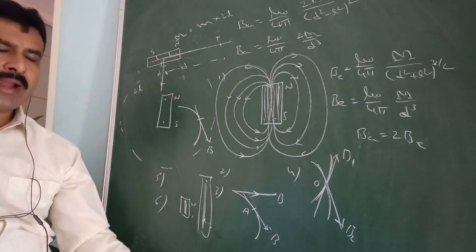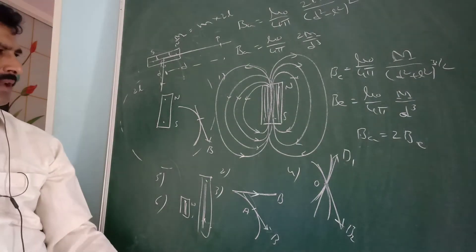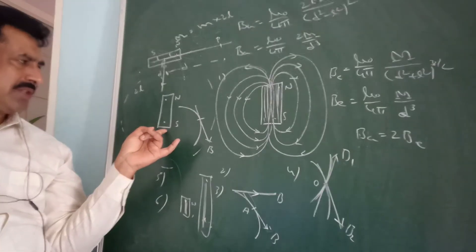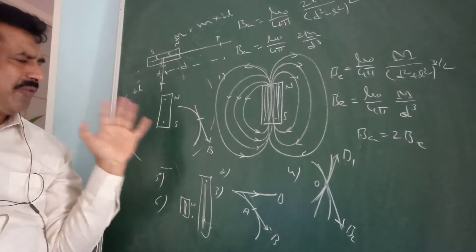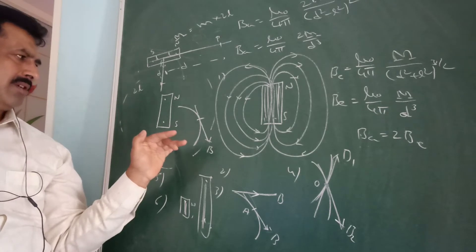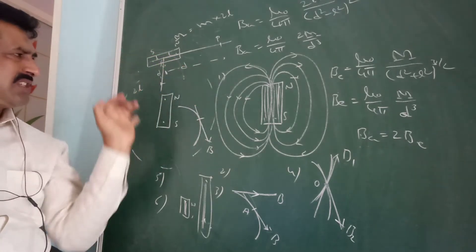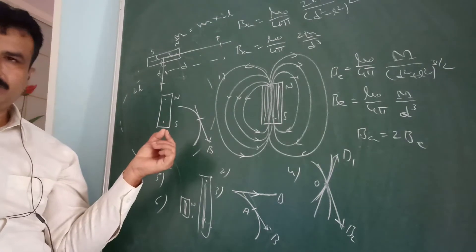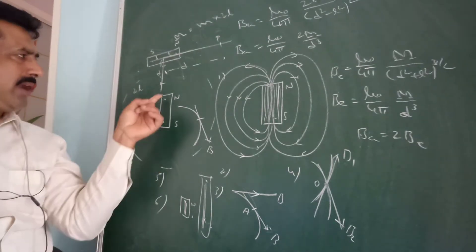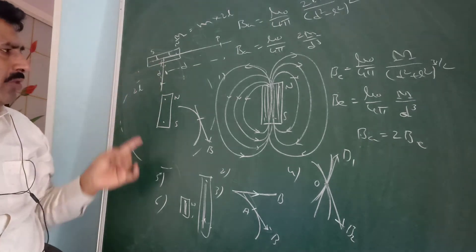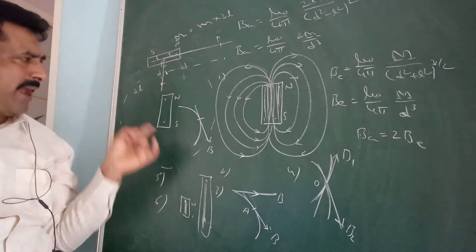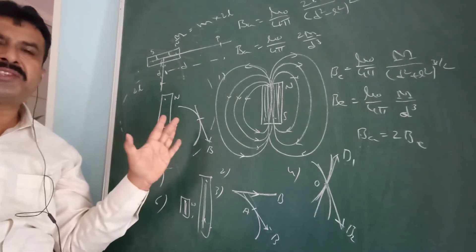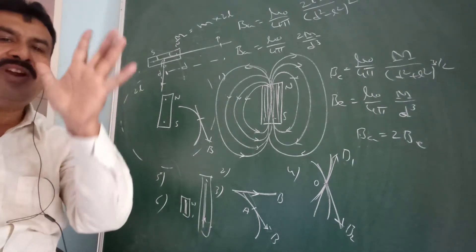The space around the magnet in which magnetic effect can be experienced is called magnetic field. The magnet surrounds the magnetic effect to produce the magnetic force we experience as the magnetic field.